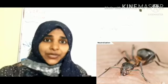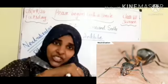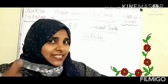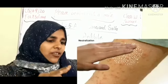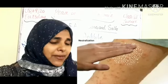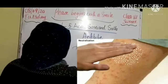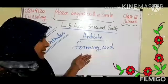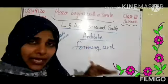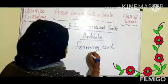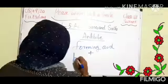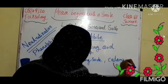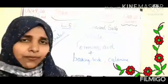Let us learn about the sting of an ant containing formic acid. When an ant bites our skin, we feel very painful because formic acid is present in the sting of the ant. At that time, we rub some moist baking soda on the skin. Calamine lotion can also be rubbed on the skin for relief from the pain.